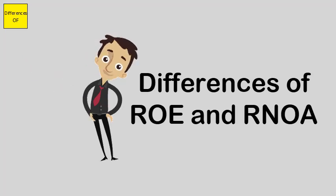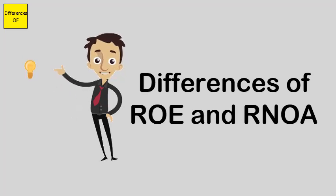Resistance is denoted with the symbol R. Impedance is denoted with the symbol Z.